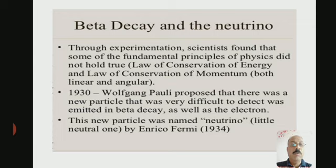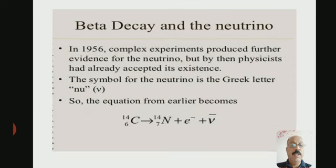In 1930, Wolfgang Pauli proposed that there was a new particle that was very difficult to detect, emitted in beta decay as well as the electron. This new particle was named neutrino by Enrico Fermi in 1934. In 1956, complex experiments produced further evidence for the neutrino, but by then physicists had already accepted its existence.